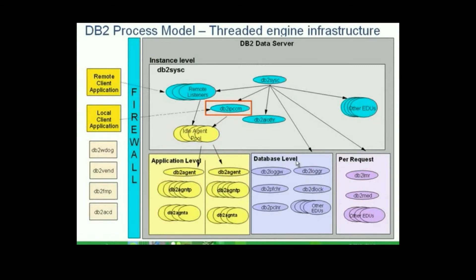At the database level, you may have other threads that perform other operations. For example, DB2LogGW is related to logging. For prefetching, we have DB2PFCHR. For deadlock detection, we have DB2DLogged. For page cleaners — to clean the buffer pool — we have DB2PCLNR, and so on.